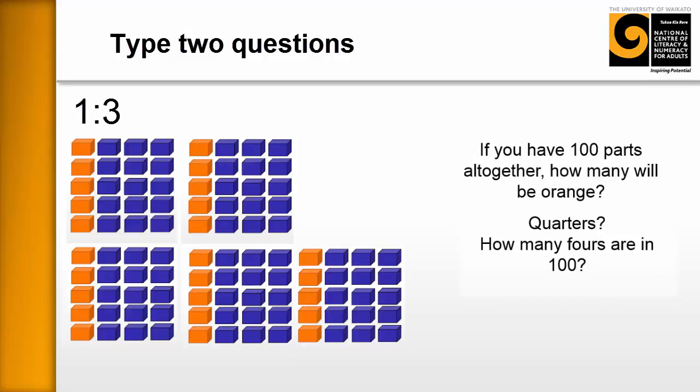And so the things they might discuss might be around quarters, how many fours are in 100. And basically, you can just sit back and listen to the kind of conversations they have. And you'll be able to get an idea of what they're thinking. It's more than likely they'll be able to do this, generalize it out and so on.